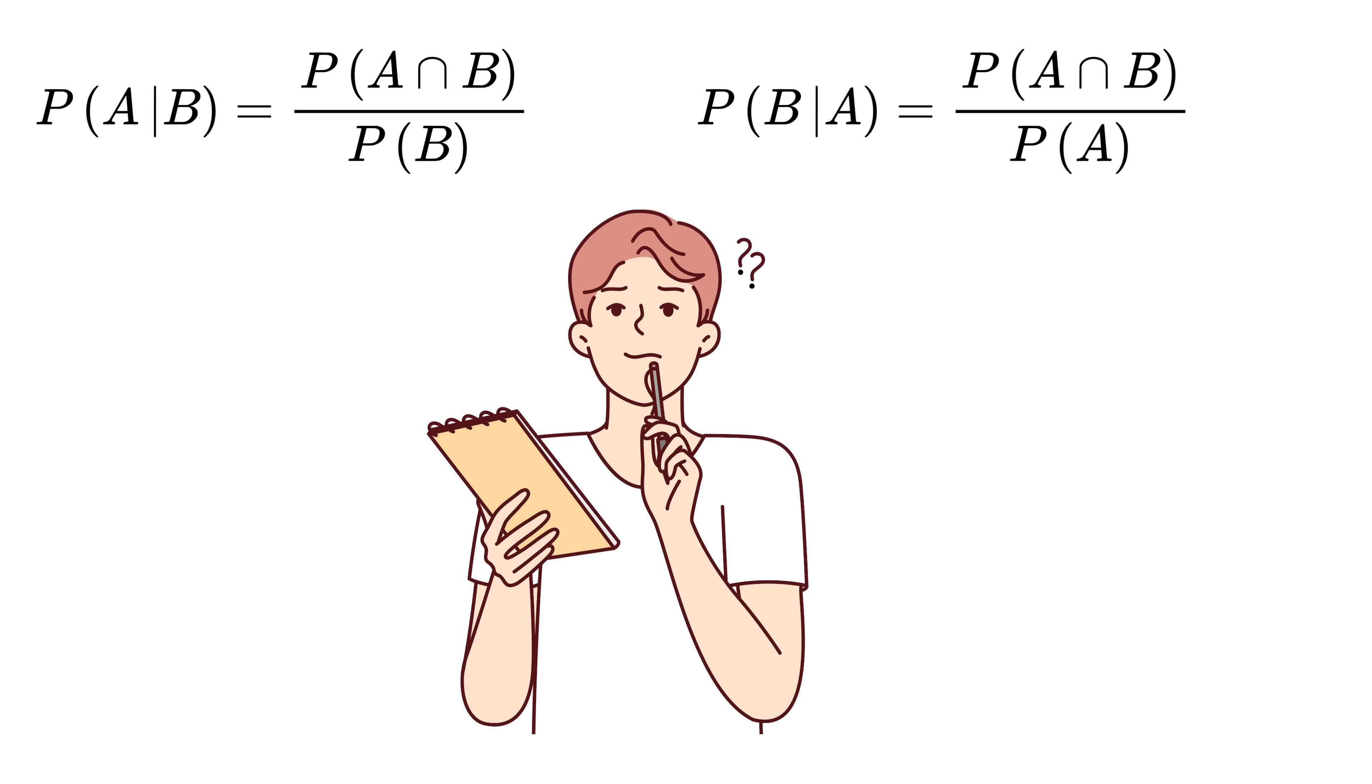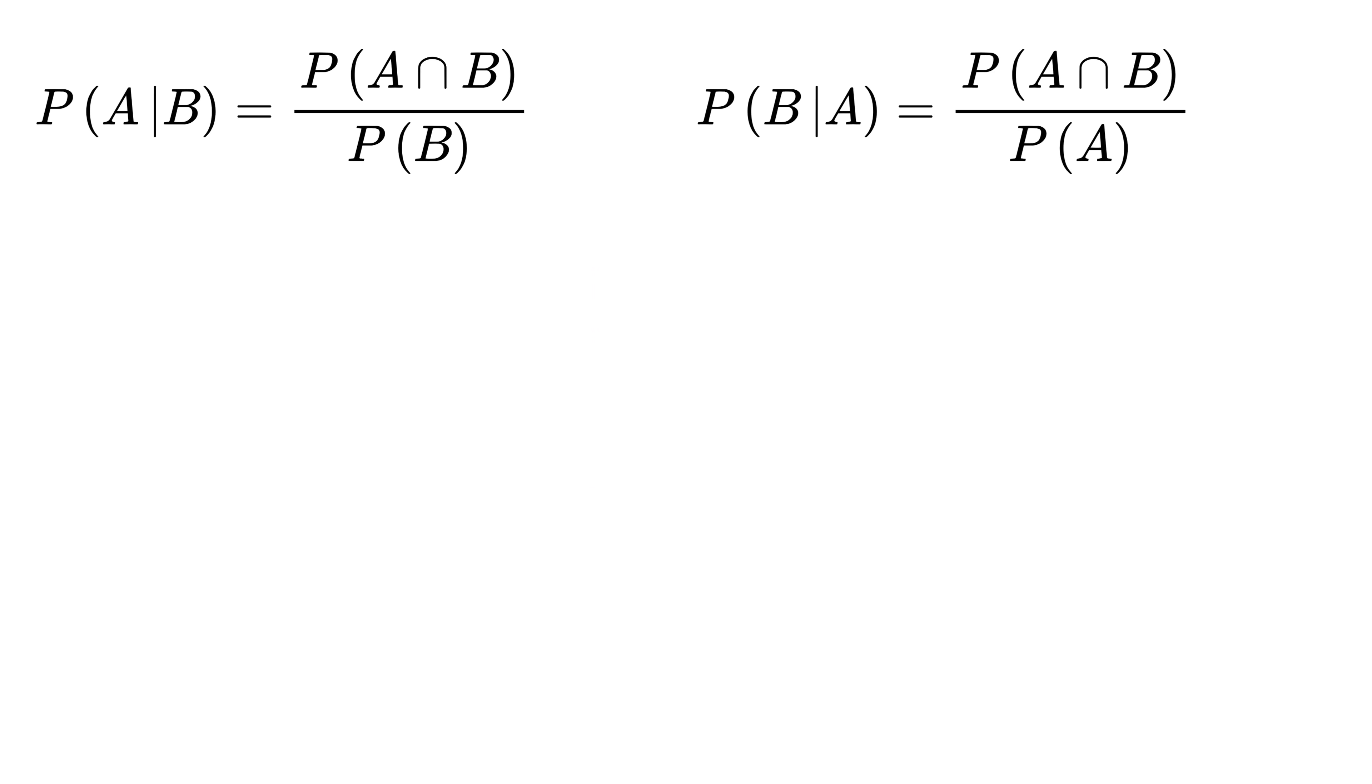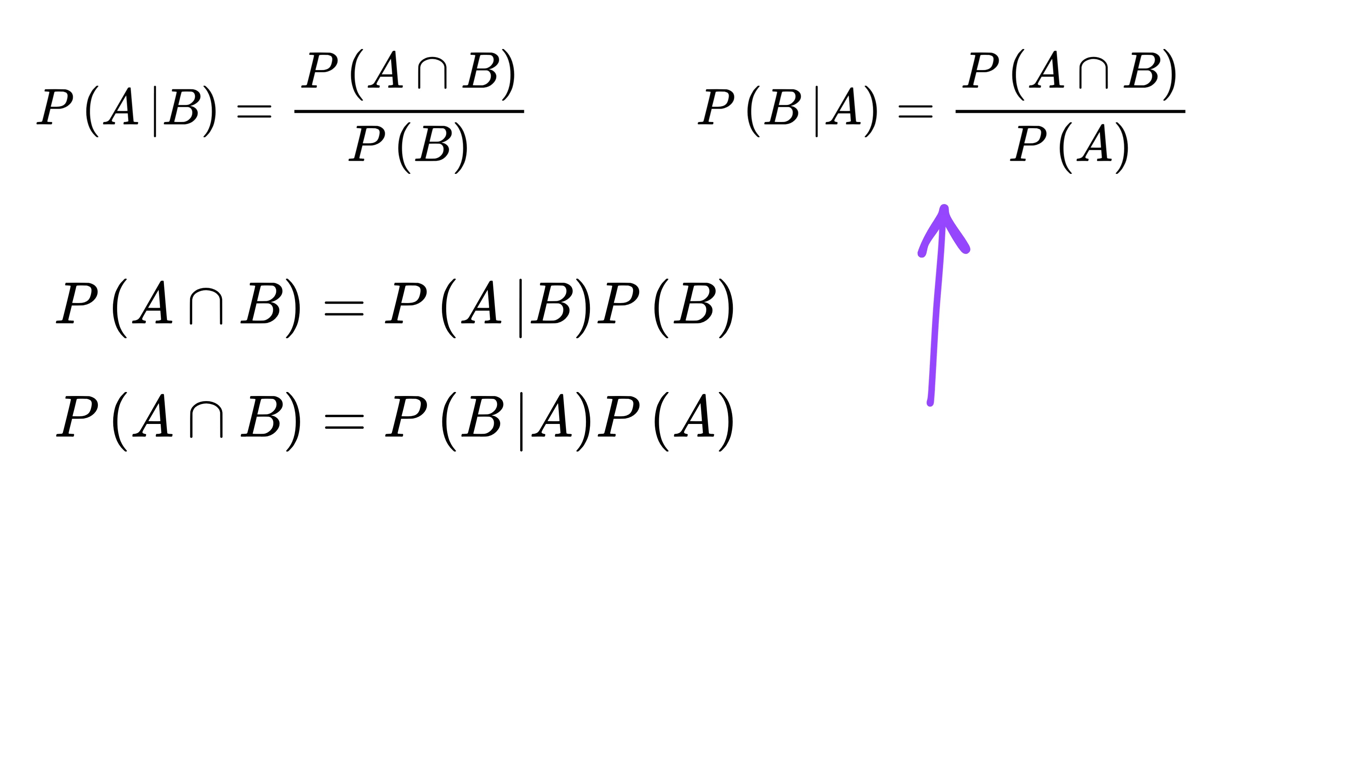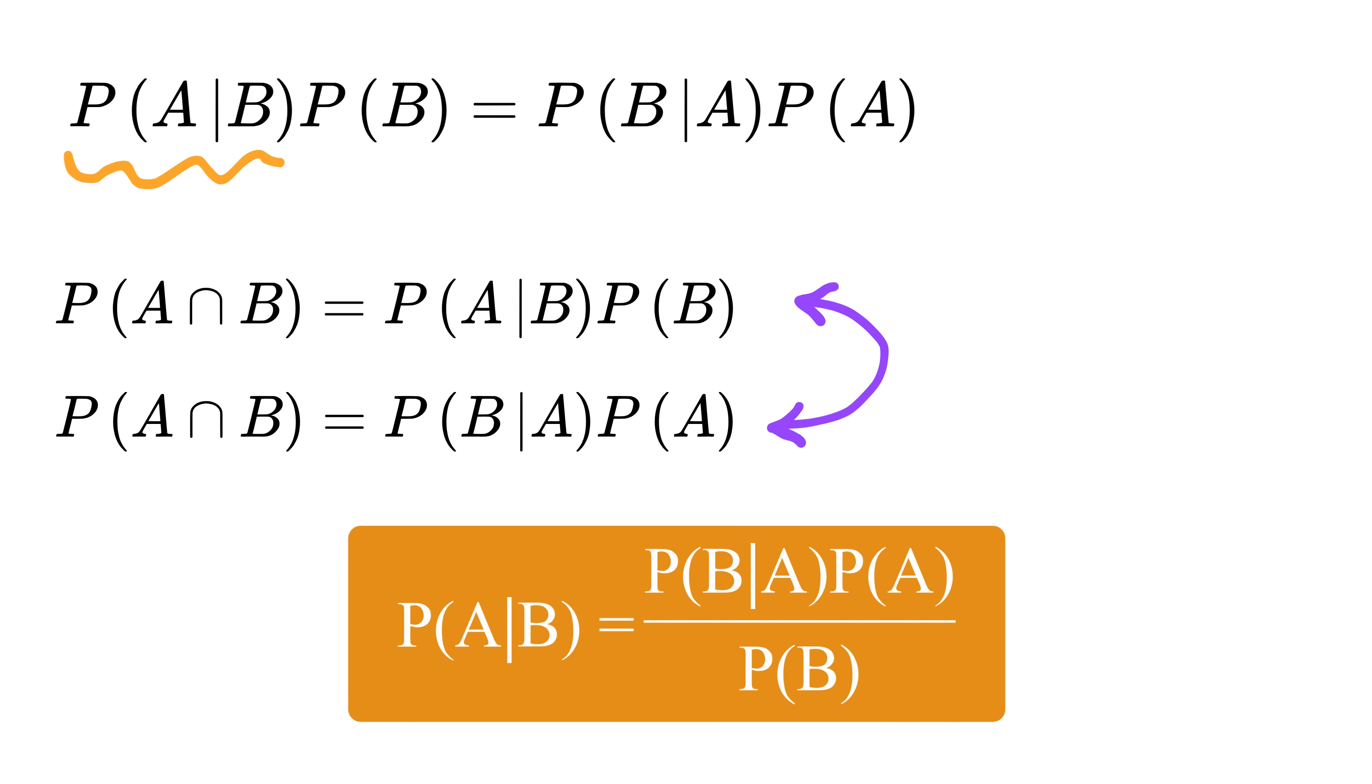Now, what can you make out from both of them? We see that the probability of the intersection, P of A intersection B, can be written in two ways. From here, it can be written like this, and from here, it can be written like this. Therefore, we can equate both of them to get this. Finally, divide both sides by P of B to isolate P of A given B. This gives us the proper form of the Bayes theorem.